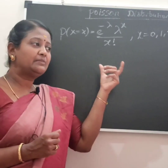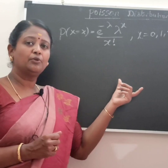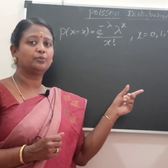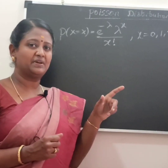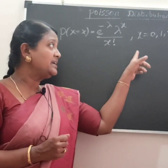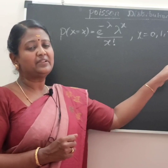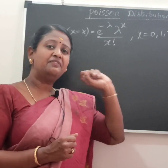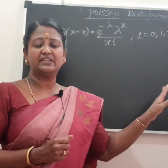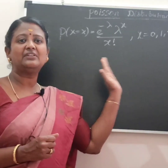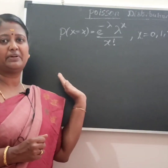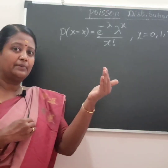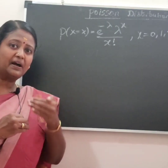In Binomial, values are from 0 to n — we talk about n. But in Poisson, we can take an infinite number of trials. We can connect with infinite events. That's why we have Binomial and Poisson as different distributions.